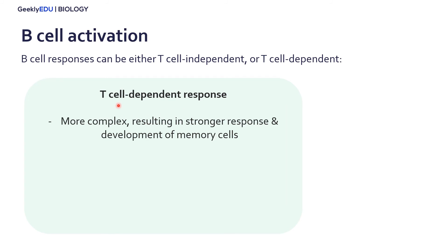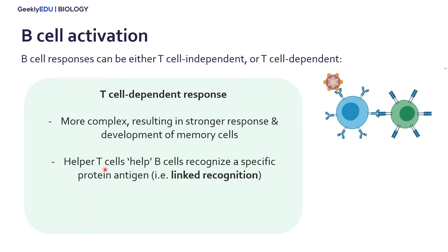Moving on to the T cell dependent response. This is a more complex response as it involves T cells, but it results in a stronger response overall and actually develops those memory B cells. Here, helper T cells will help the B cells recognize and bind to a protein antigen. While the independent response can directly bind to non-protein antigens, this response is for B cells to bind to protein antigens. Here we have the T cell in green, and once it binds to our B cell, the B cell can bind to the protein antigen. This is called linked recognition.